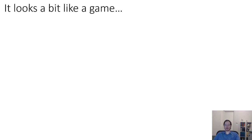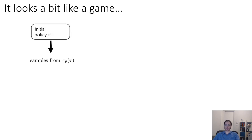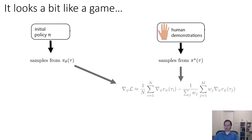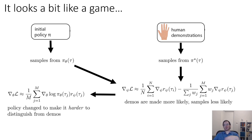One of the things some of you might have recognized is that the structure of the algorithm I described in the previous part of the lecture looks a bit like a game. We have this initial policy, we produce samples from that policy, we have human demonstrations and get samples from them, and we combine these samples to produce a reward function that makes the human demonstrations look good and the policy samples look bad. Then we change the policy so that it actually optimizes that reward function, making it harder to distinguish from the demos.